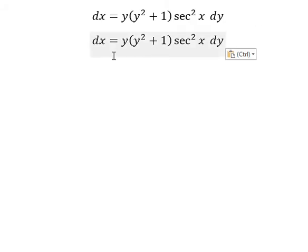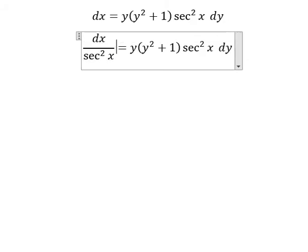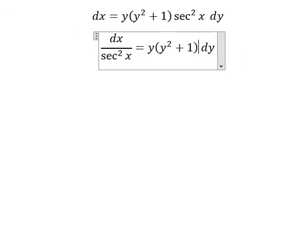So we have secant squared x here. Next we know that secant squared x is equal to 1 over cosine squared x.